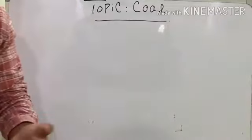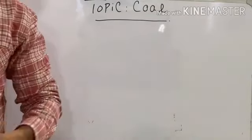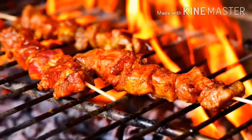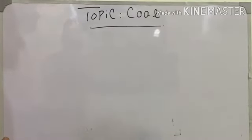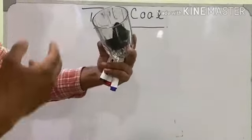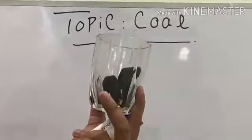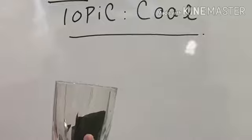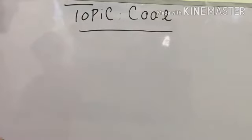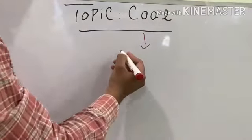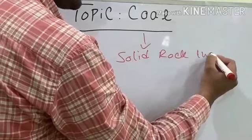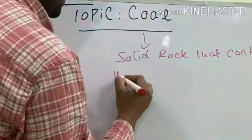Before starting today's topic, I want to give an example. If we go for dinner and order a barbecue, the basic thing that helps to cook that barbecue is coal. I am having coal in this class — you can see two particles of coal. Coal acts as a fuel that is used for combustion. So let's move toward the topic. Coal is a solid rock that can be used as a fuel.